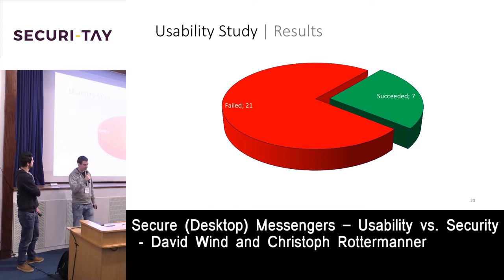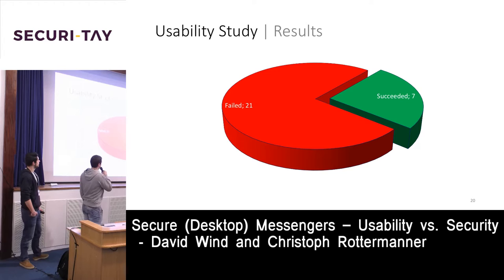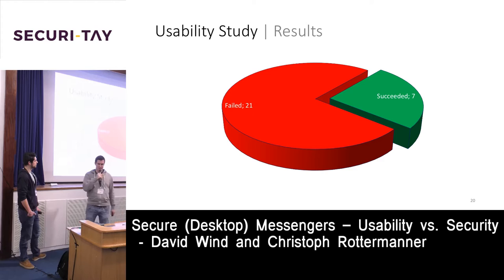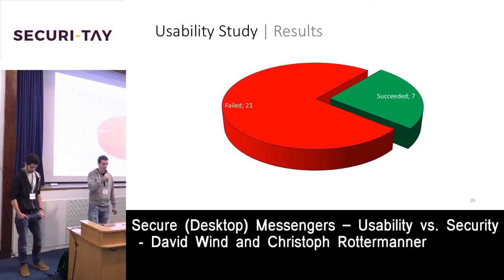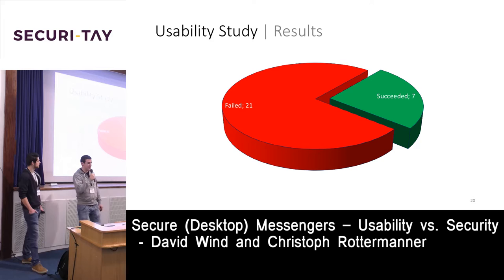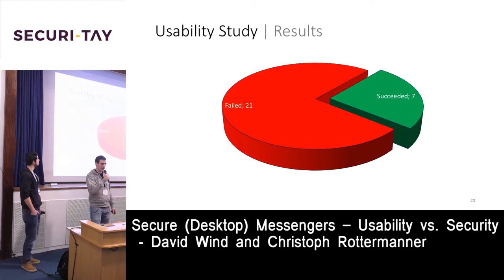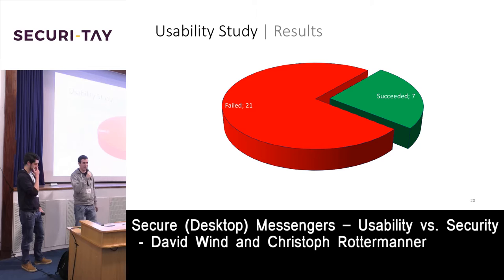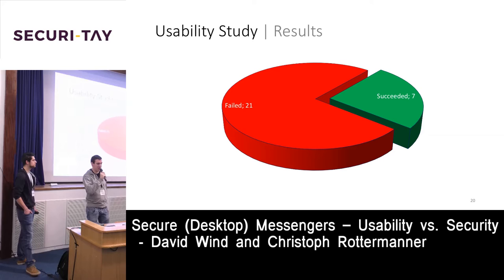The results: only seven participants were able to verify each other; the other 21 failed. Some participants simply asked in the chat — which was being man-in-the-middled by us — 'Are you Bob? Is everything OK?' and we just replied 'yes, everything is fine.' Others called the other person into the room and asked in person, only to be told 'yes, we are Bob.' The core problem is that people don't understand what verification means.